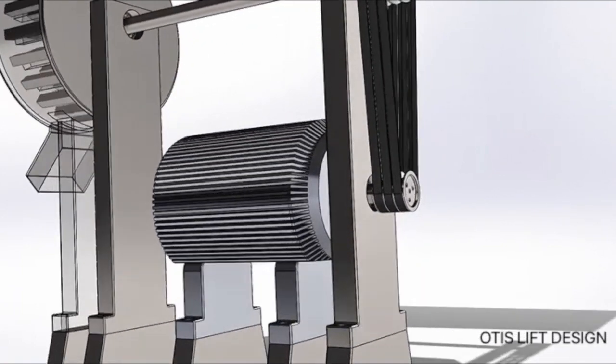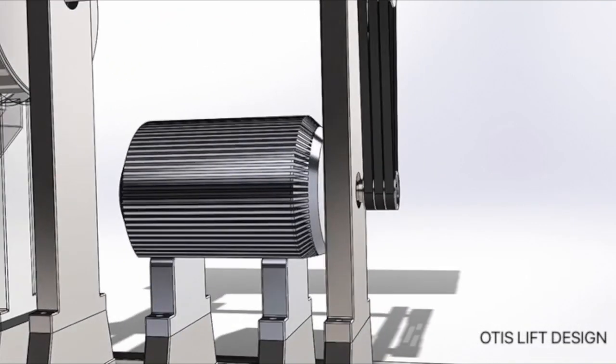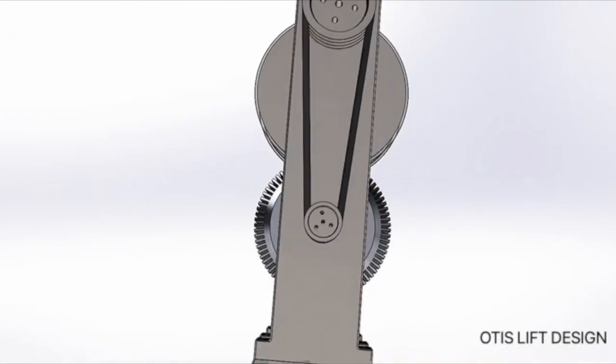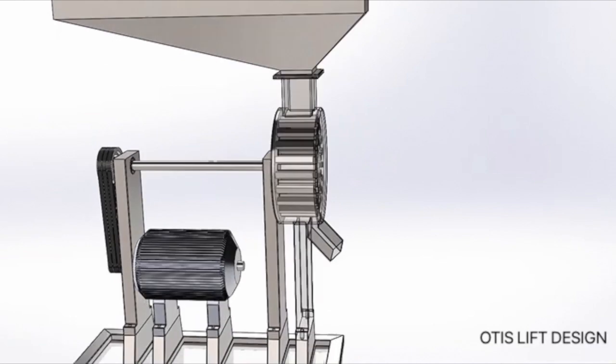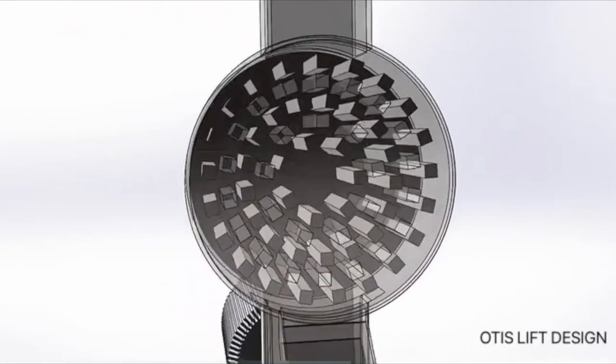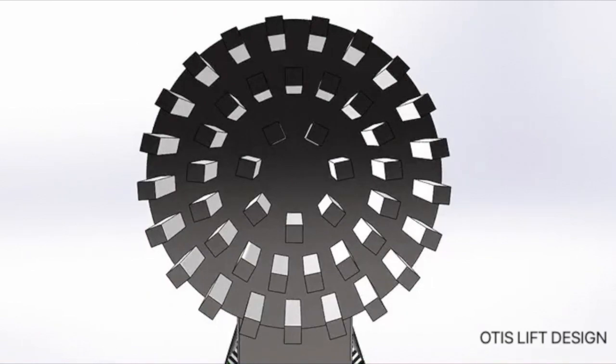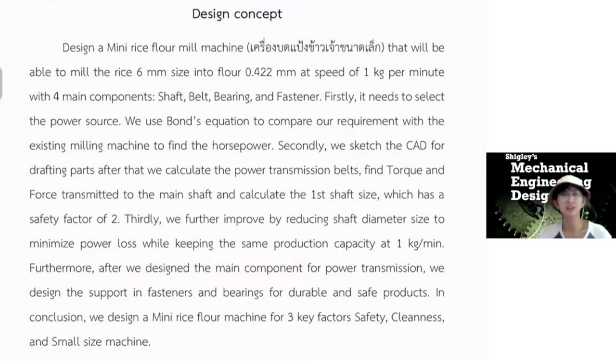We use the bond equation to compare our machine with another machine that exists in the real milling machine. So we got the horsepower and we scan the cab for driving part and we can calculate that power transmission operation in the belt. After that, we can find the torque and force transmits to the main shaft. And calculate the first trial and error. We just have the safety factor of two.